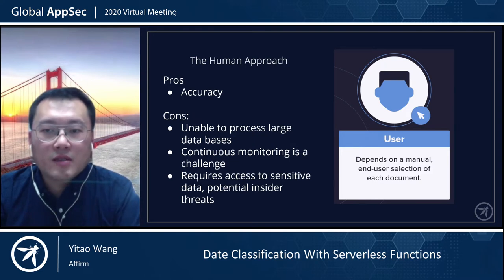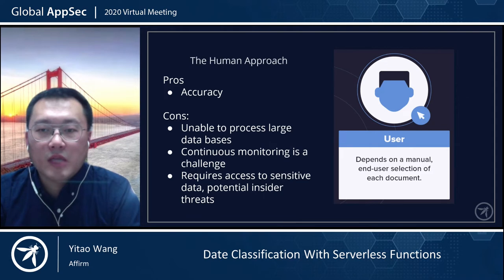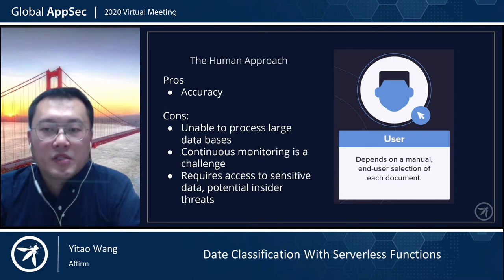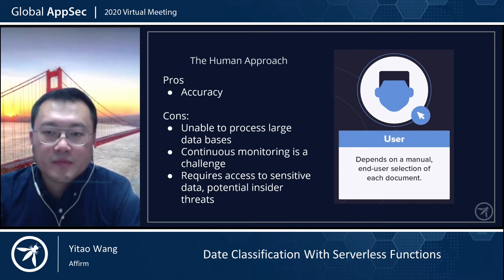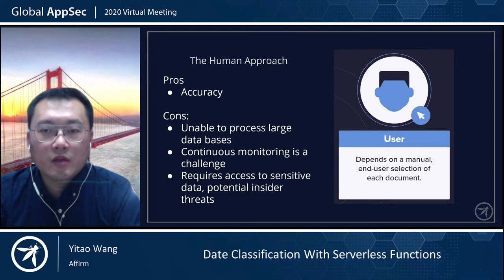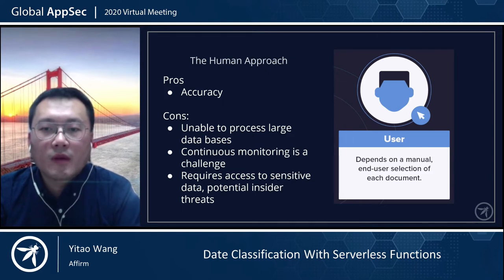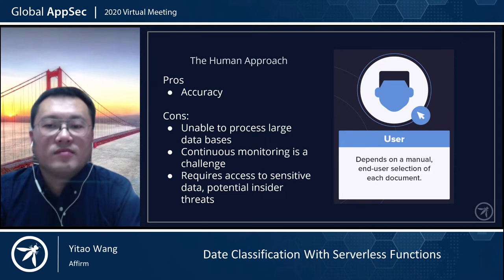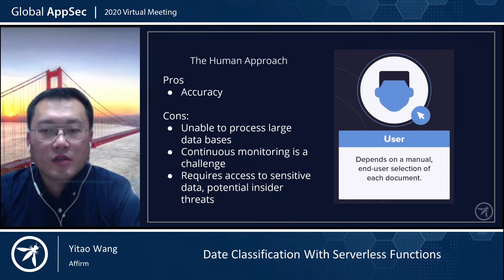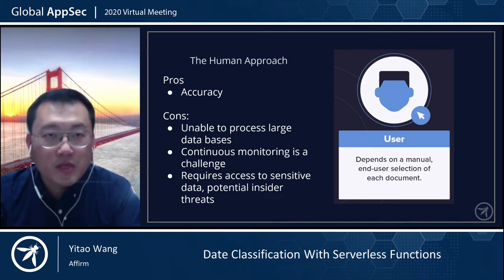For policymakers such as the GRC team, enforcing data-related policy to ensure data is compliant with data control policy and retention policy can be very challenging if there's no automated tool in place. Under the human method, employees or contractors will be given access to the sensitive data set to perform the task, which exposes the database to actual risks such as insider threats or client-side attacks. This may happen when access is compromised and user credentials are stolen — think about the most recent Twitter hack as an example.